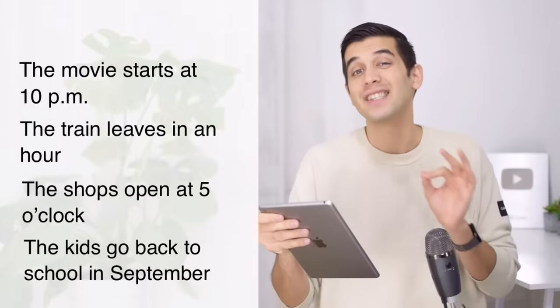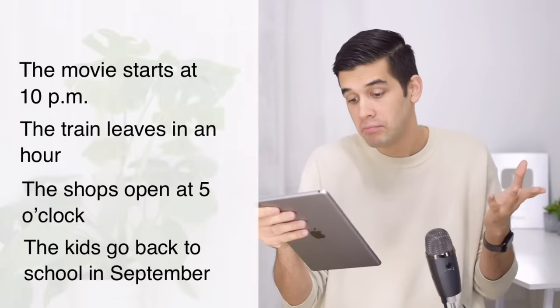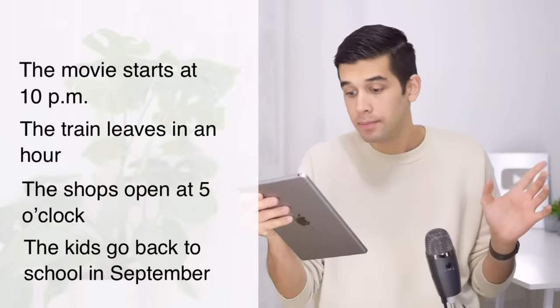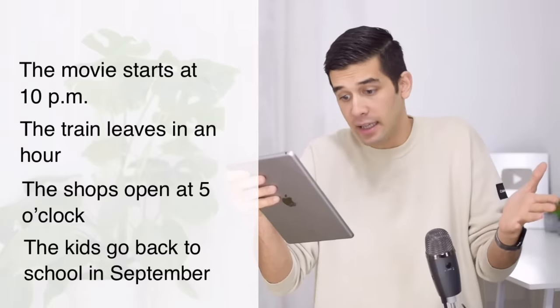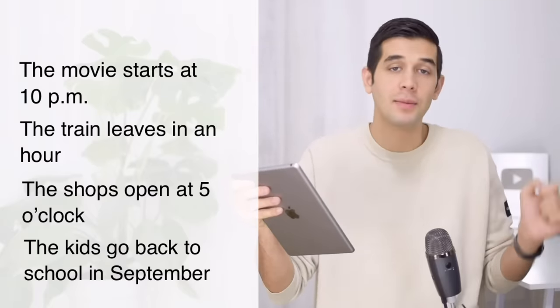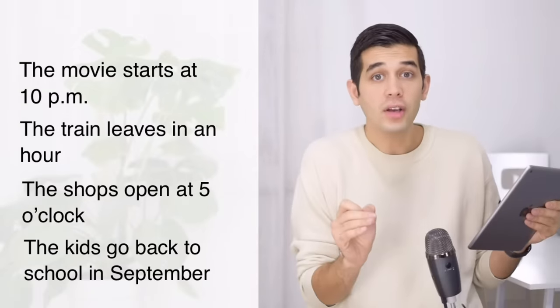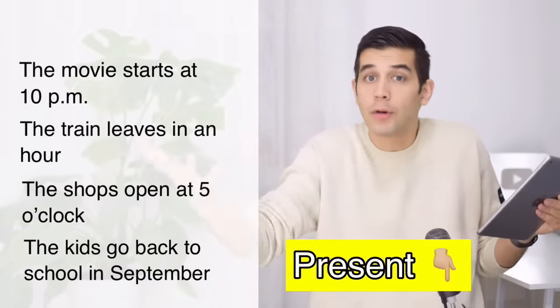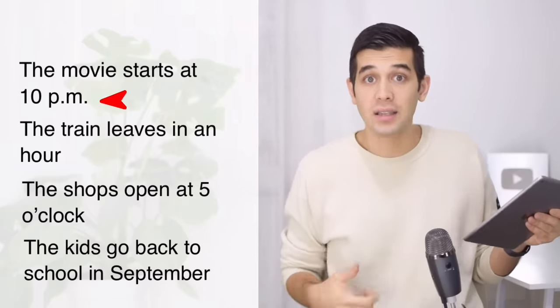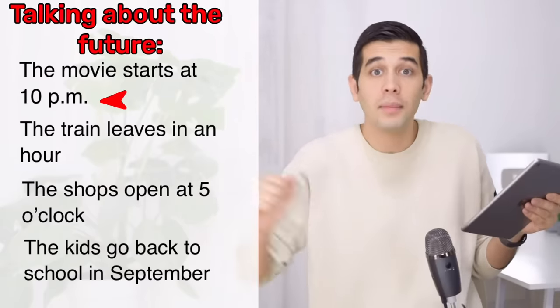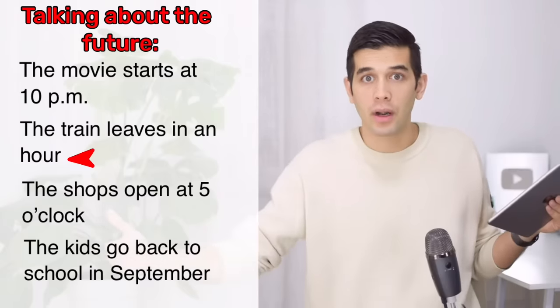Let's learn what grammar we can use to talk about the future. Lesson one. Look at these examples: the movie starts at 10pm, the train leaves in an hour, the shops open at 5 o'clock, and the kids go back to school in September. Look at these sentences — are we talking about the past, present, or future? The movie starts at 10, and right now it's 6, so we're talking about the future. The train leaves in one hour — one hour from now, it's in the future.